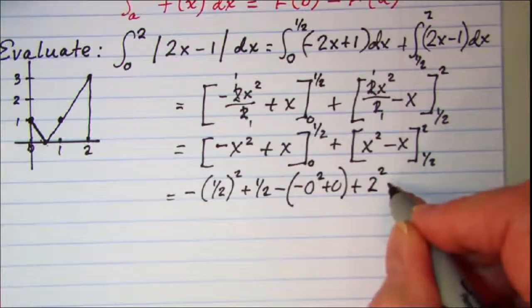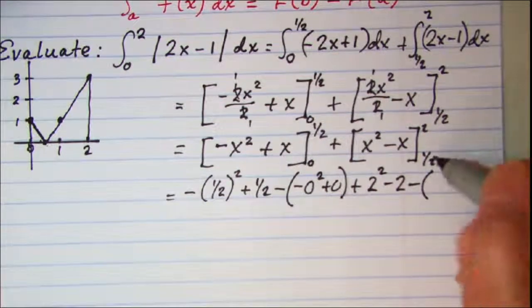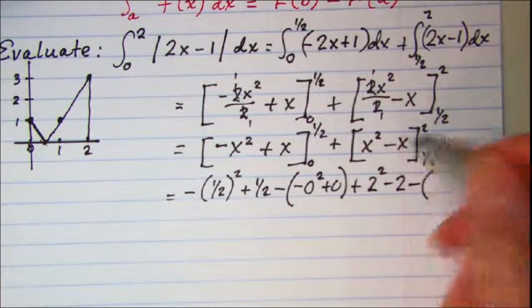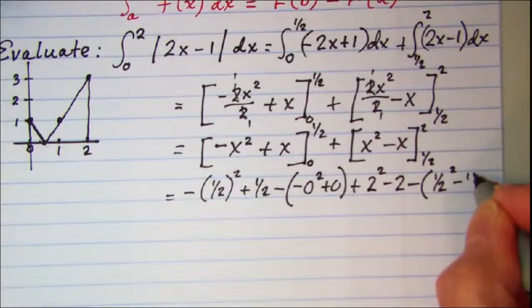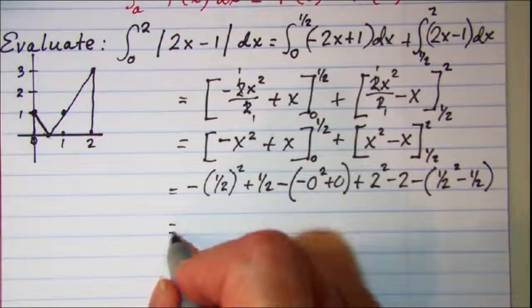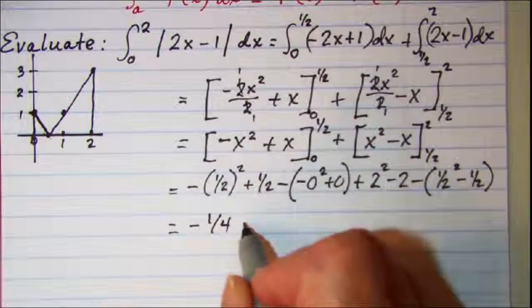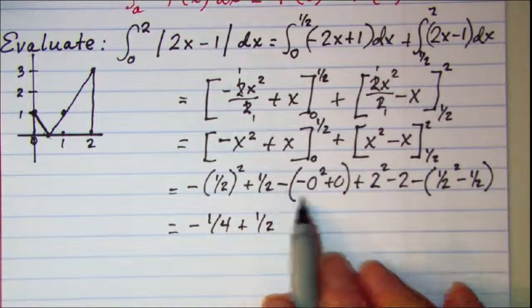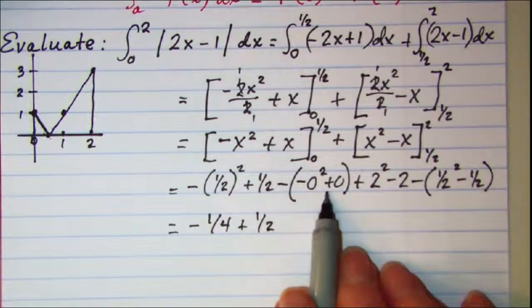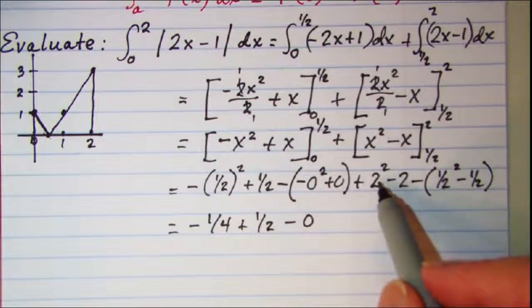This gives me negative 1/4 plus 1/2, this is just 0 so I'll put minus 0 here, and then plus 4 minus 2 minus, and this is 1/4 minus 1/2.